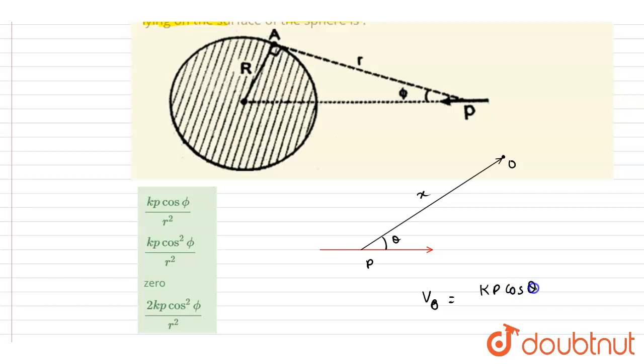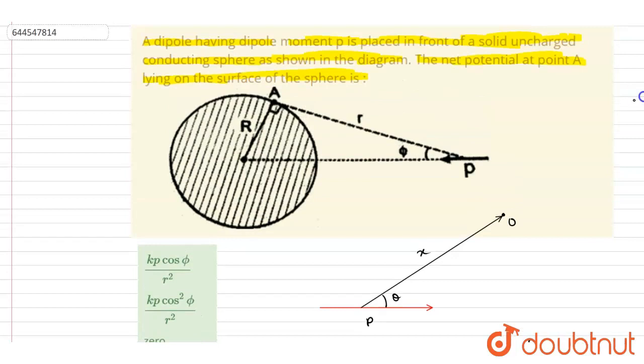Now here we want the potential at A, and it is said that it is an uncharged conducting sphere. So if I say this is a conducting sphere, if you will keep this dipole like this, if you see here it will be positive charge and here it will be negative charge. So what will happen, the charge will induce on the surface of the conductor so that the electric field inside the conductor will become zero.